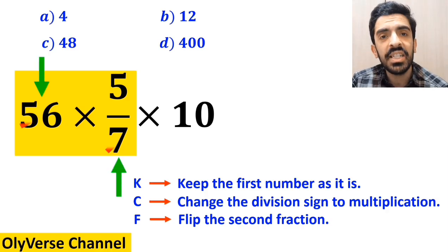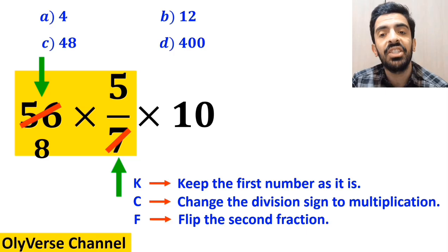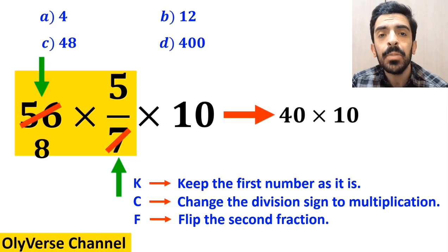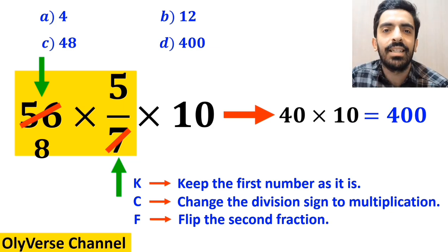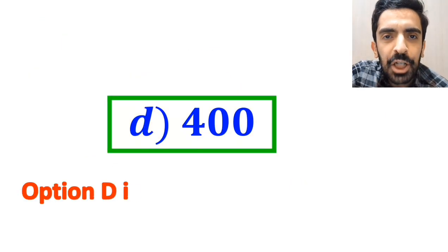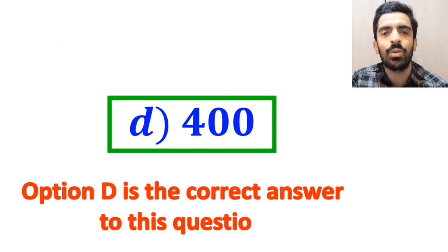Now, the number 56 cancels out with the 7 in the denominator. And this expression simplifies to 40 multiplied by 10, which finally gives us the answer 400. Therefore, option D is the correct answer to this question.